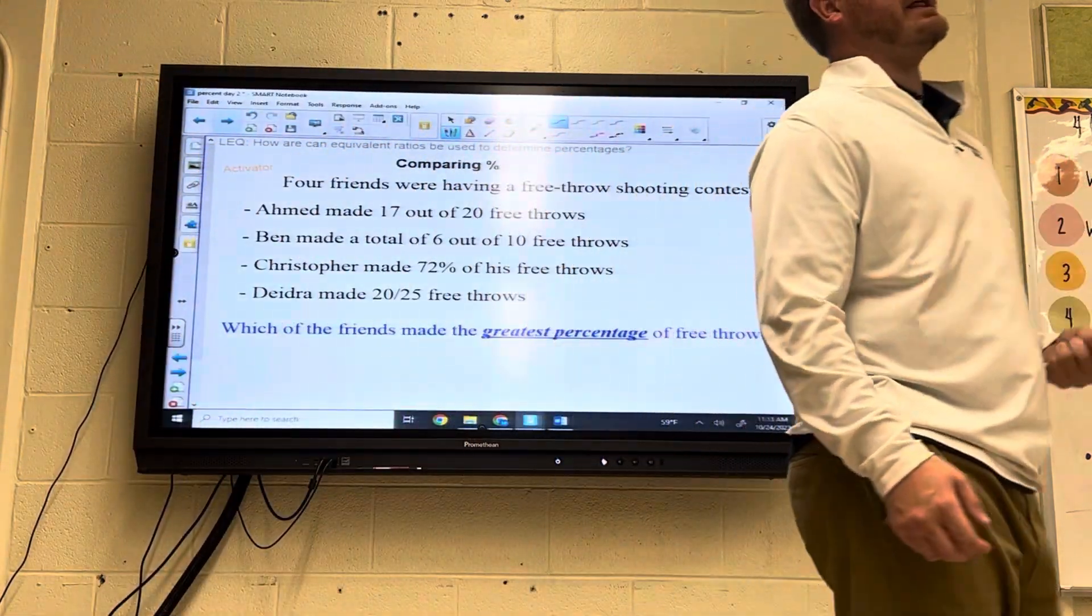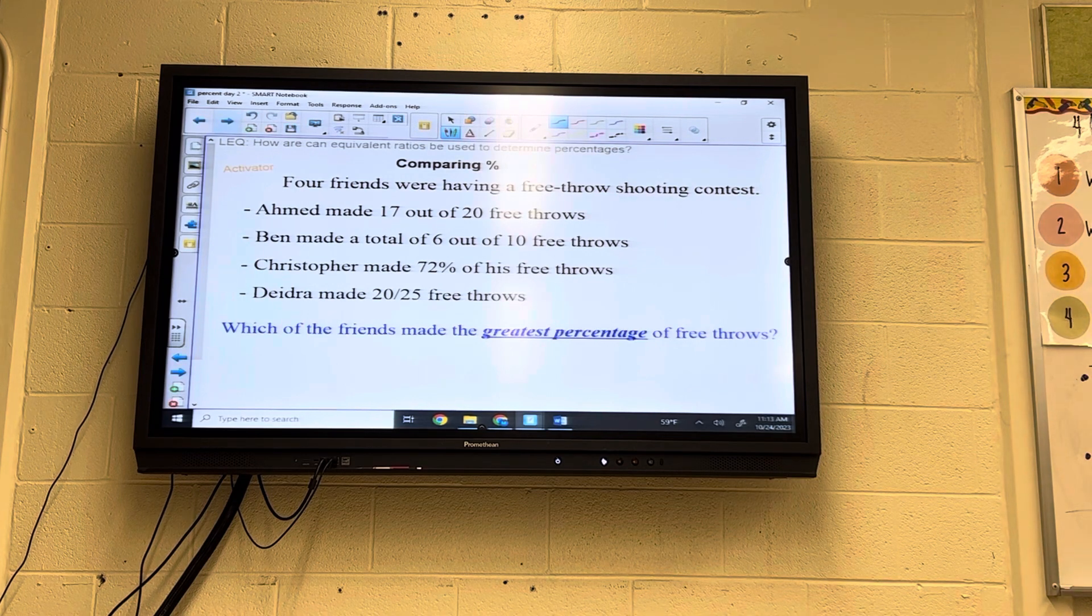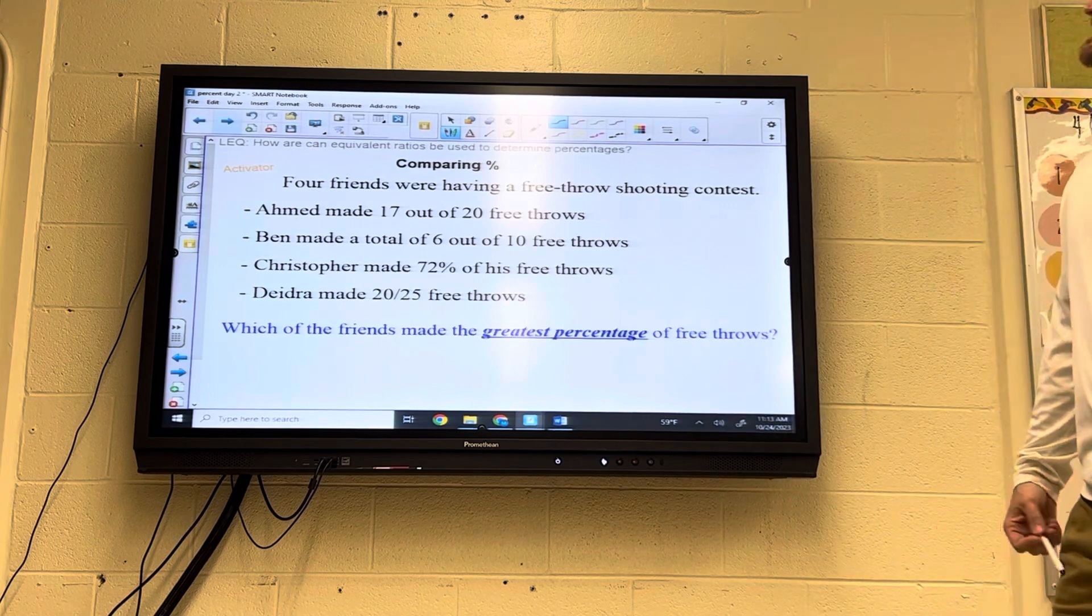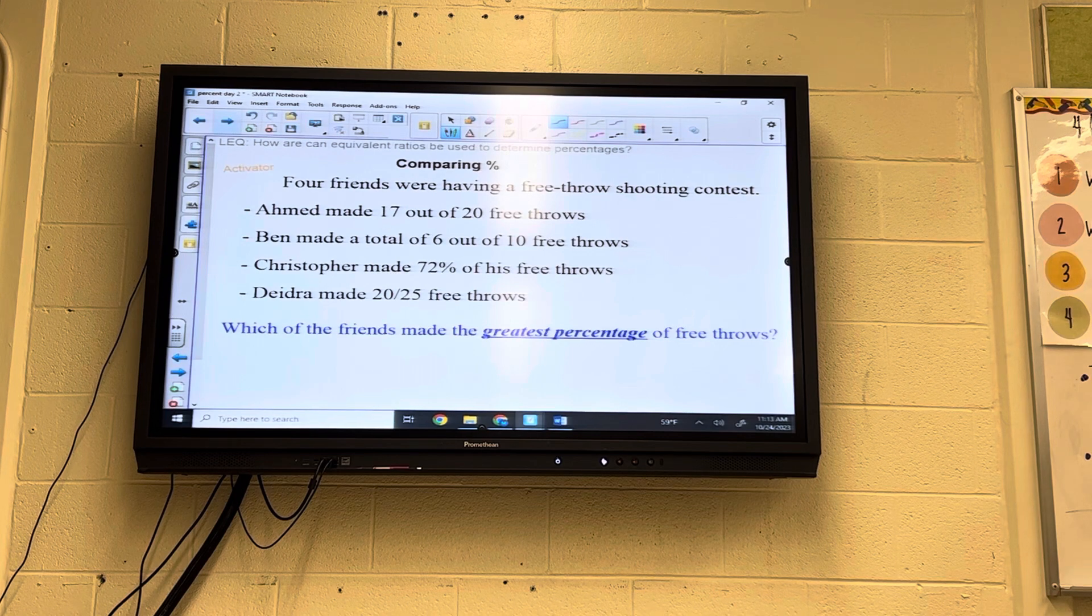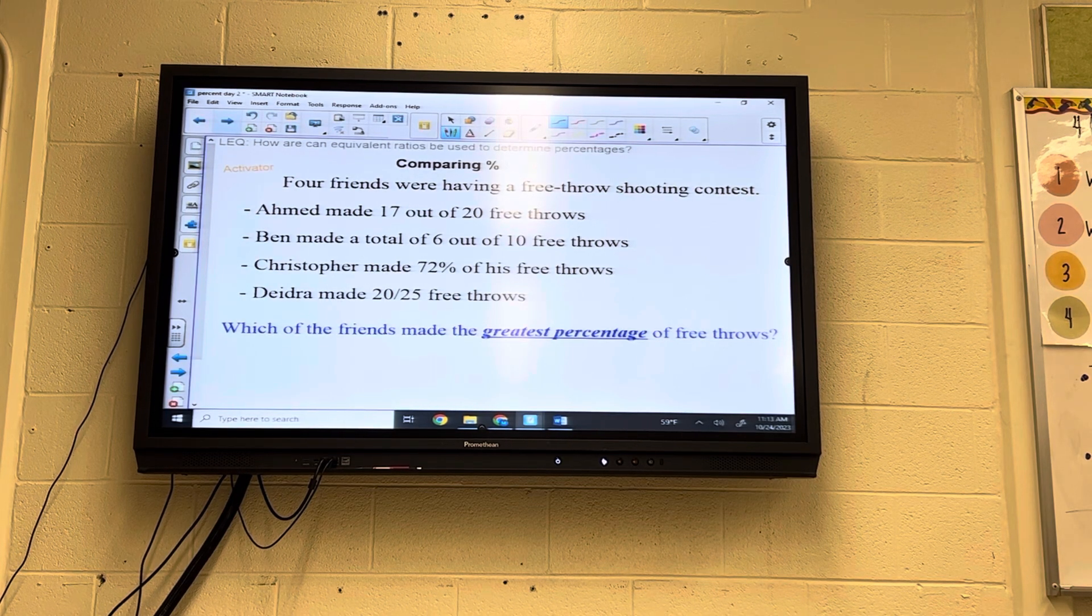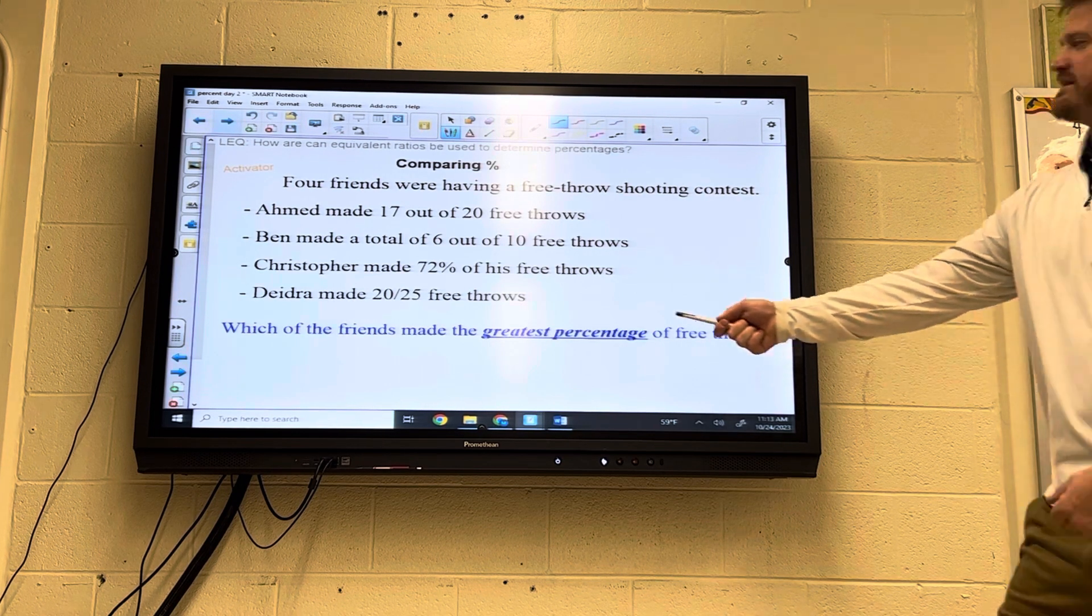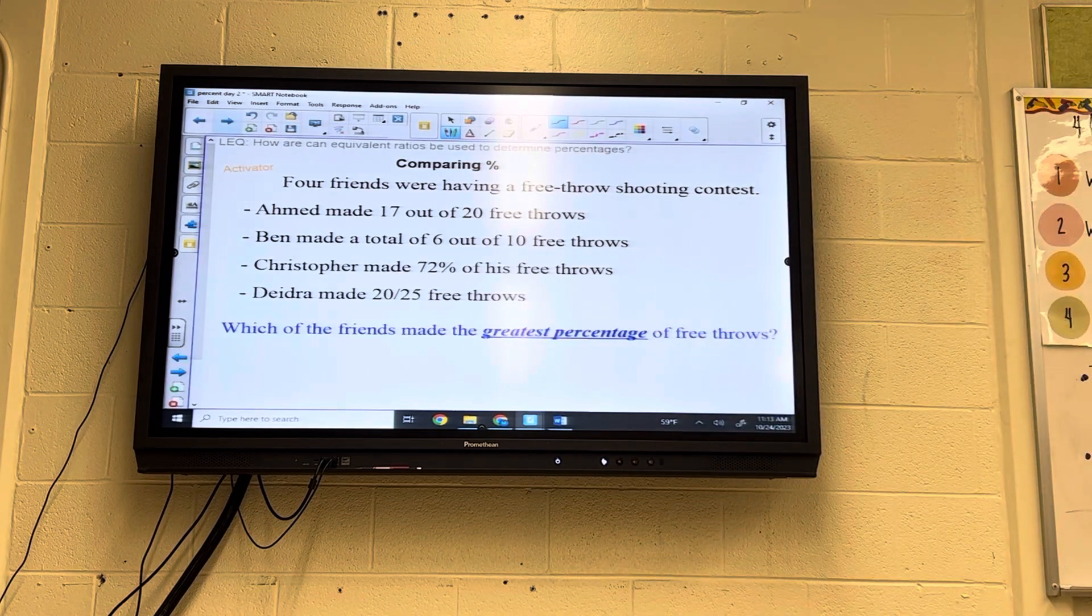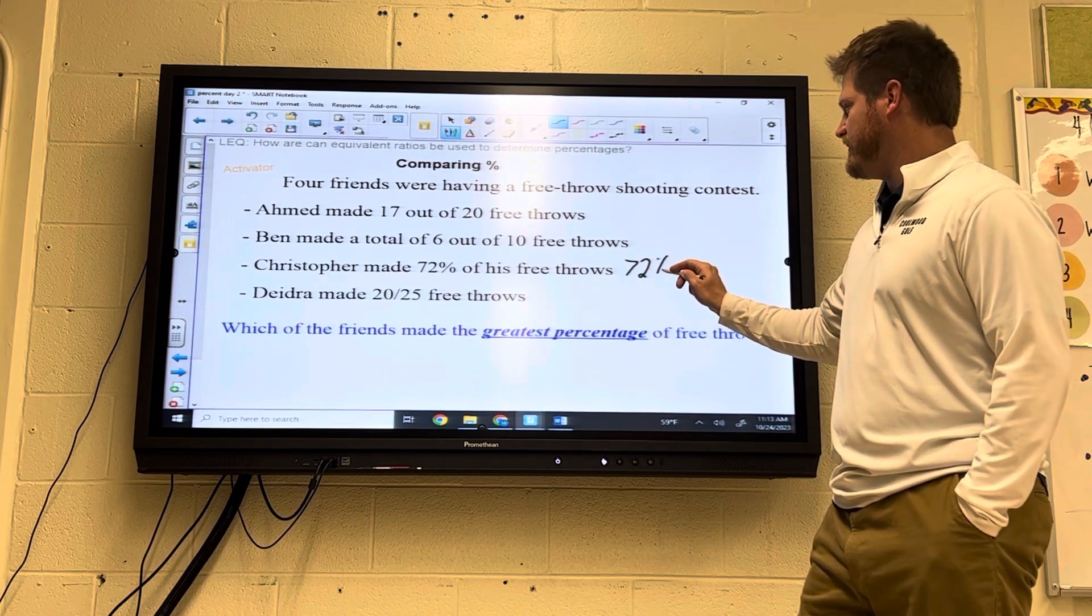Bringing us through today's activator. If you were here yesterday, this should be light work. Pause the video. Do this on your own. Alright. Let's look at this. Four friends are having a free throw shooting competition. Ahmed made 17 out of 20. Ben made 6 out of 10. Christopher made 72%. And Deidre made 20 out of 25. First of all, we're trying to make all of these percentages. Because it's which friend had the greatest percentage of success? Who made the most shots percentage-wise?